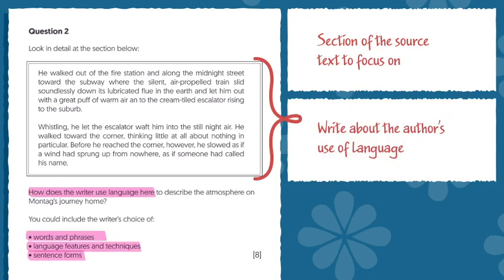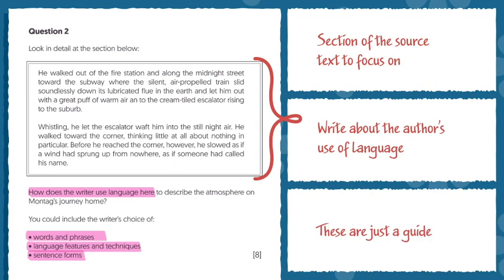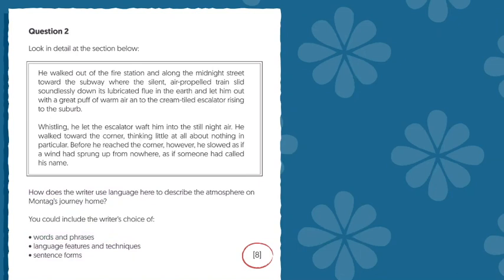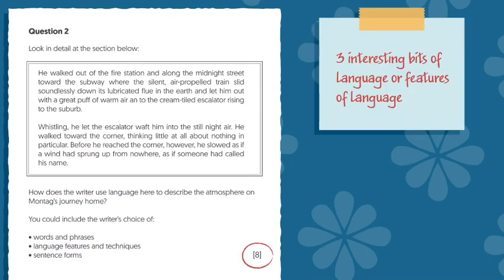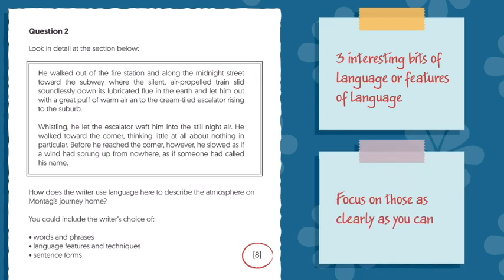You'll be given some bullet points to help stay on track, but remember these are just a guide — you don't have to write about everything included here. There are only 8 marks for this question, so the examiner's not expecting an essay. You just have to pick out roughly 3 interesting bits of language, or features of language, and focus on those as clearly as you can.